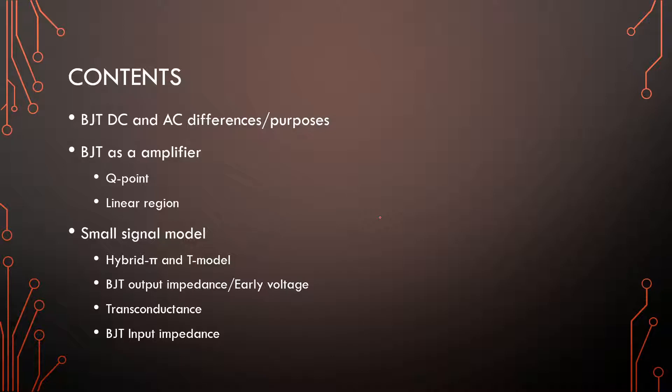So we're going to look at the purposes of DC and AC analysis. Then the BJT is an amplifier, so what role the Q point plays and what do we mean with linear region, and then the actual small signal model. There are two, the hybrid pi and the T model, and then the different parameters around this model that we are using.